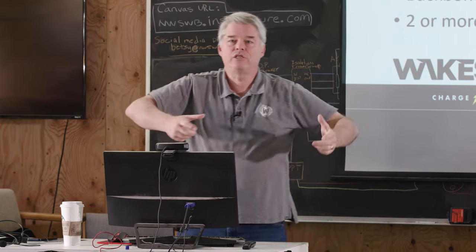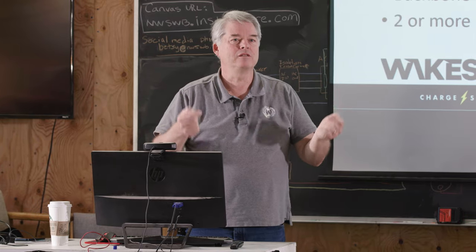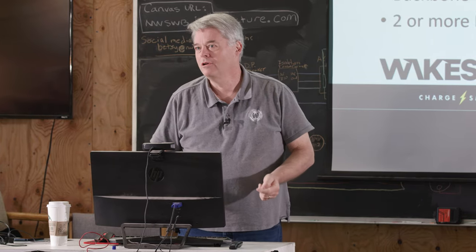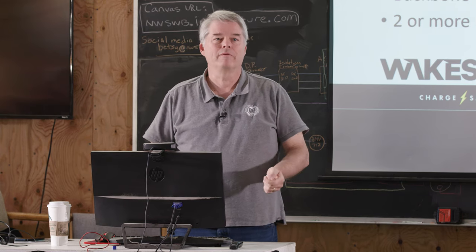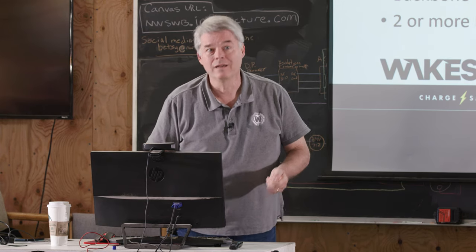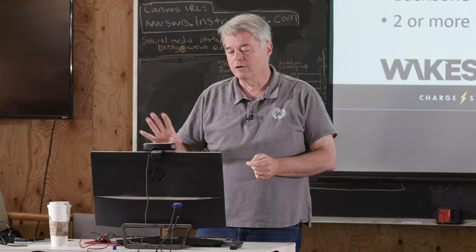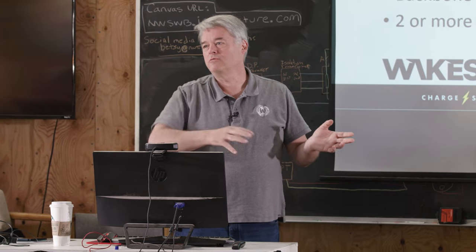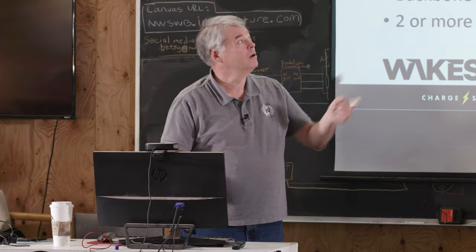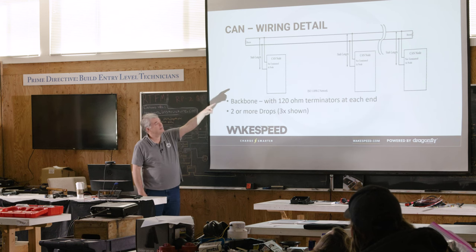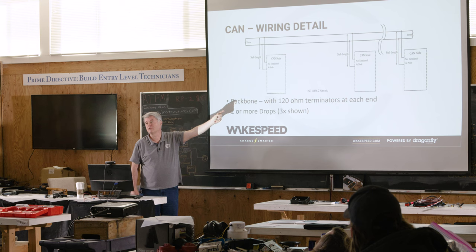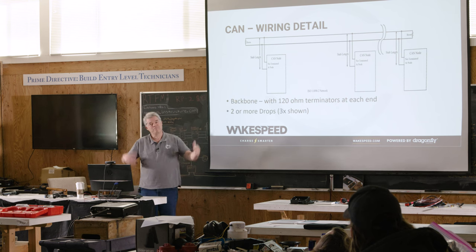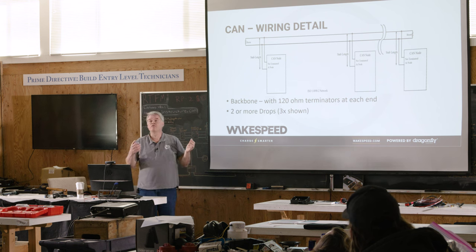Improper termination is probably the second biggest issue we run across in CAN subsystems — either not terminated, or more commonly, over-terminated. Here's a quick test: if your CAN subsystem is unpowered and you apply an ohmmeter, you have 120 ohms on each end. Those two in parallel, you should see 60 ohms. If you see above 60, you're under-terminated. If you see 45 ohms or less, it's over-terminated.